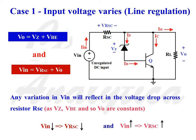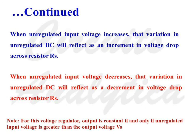In general, we can say that whenever input voltage varies, that variation reflects across the current limiting resistance RSC. If the variation in input voltage is positive, the voltage drop across RSC increases proportionally. If the variation in input voltage is negative — that is, if input voltage falls — that variation reflects as a decrement in the voltage drop across the current limiting resistance RSC. So when unregulated input voltage increases, it reflects as an increment in voltage drop across RSC, and when it decreases, it reflects as a decrement in voltage drop across RSC.